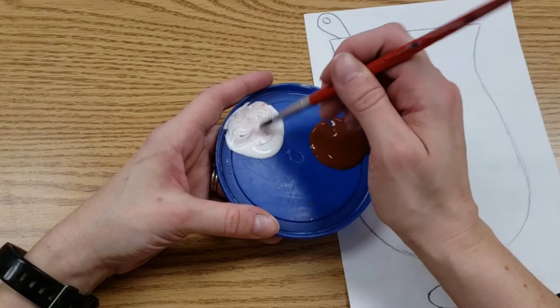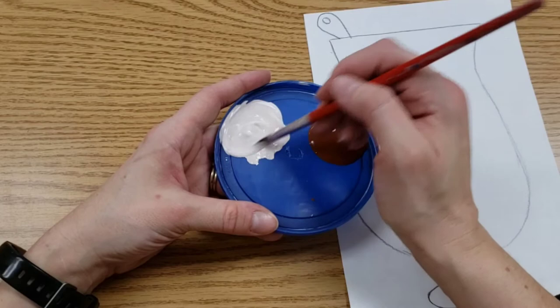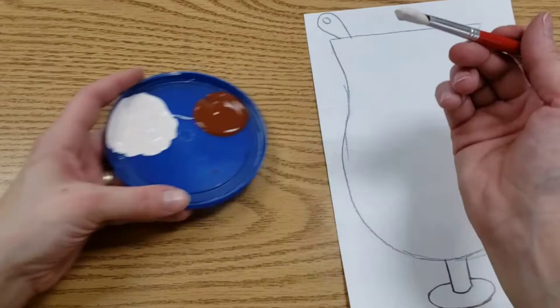And we're going to put that hue in the white and you stir it completely. This means there will not be any more white left on your tray. It will all be a different color. In my case, it's going to be a super, super light brown.